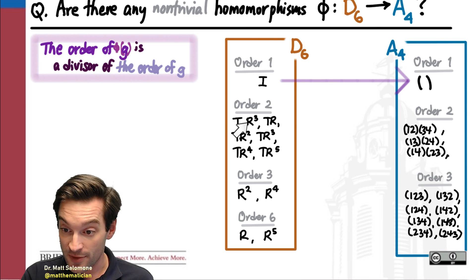But the order 2 elements of D6 could go to order 2 elements in A4, or they could go to the identity, but they could not go to the order 3 elements, according to this principle, right?